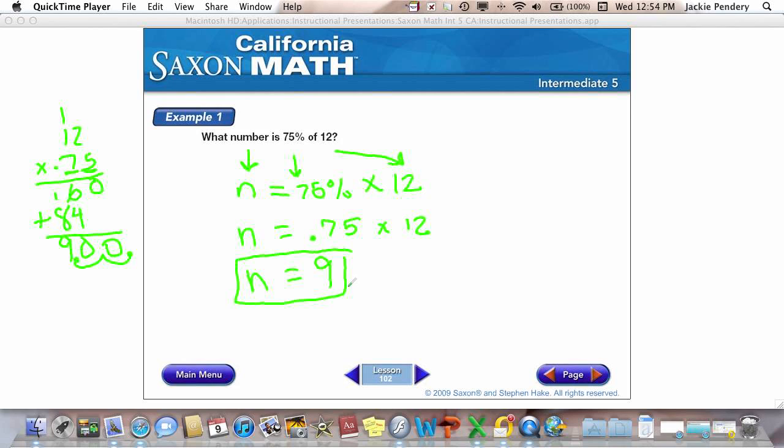The other way to do this is to convert 75 percent to a fraction. n equals 3/4 times 12. I've reduced it to 3/4 because I know that 75 over 100 reduces by 25, which equals 3/4. So I go ahead and solve: n equals 3/4 times 12/1 equals 36/4, n equals 9.